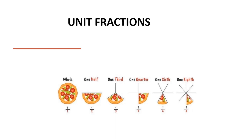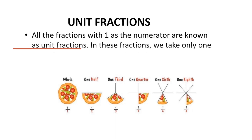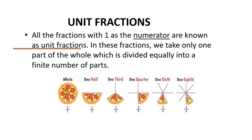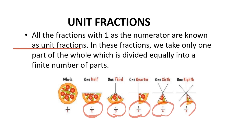Unit fractions: a unit fraction means all fractions with 1 as the numerator. For example, 1 upon 3, 1 by 4, 1 by 6, 1 by 8 — all have 1 as the numerator part. Whatever the denominator may be, the numerator should be 1. That means however many equal parts you make, you take only one part. Those fractions are called unit fractions.